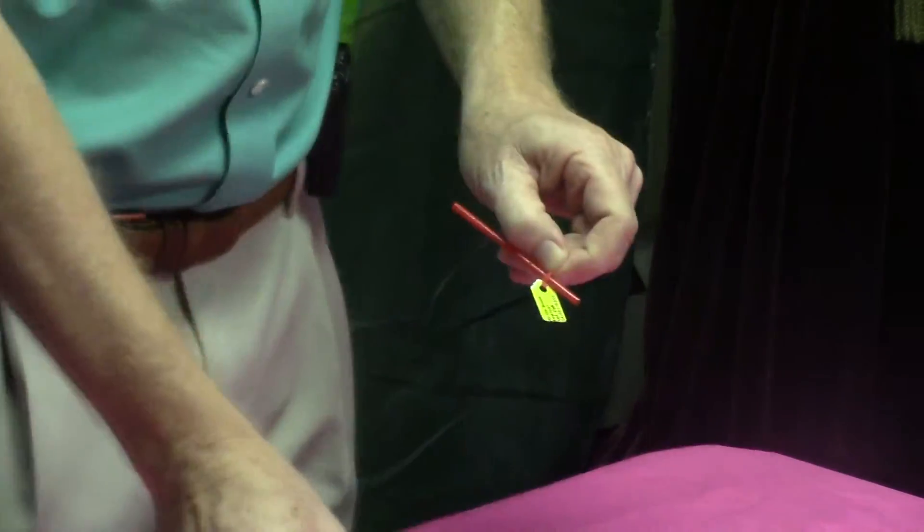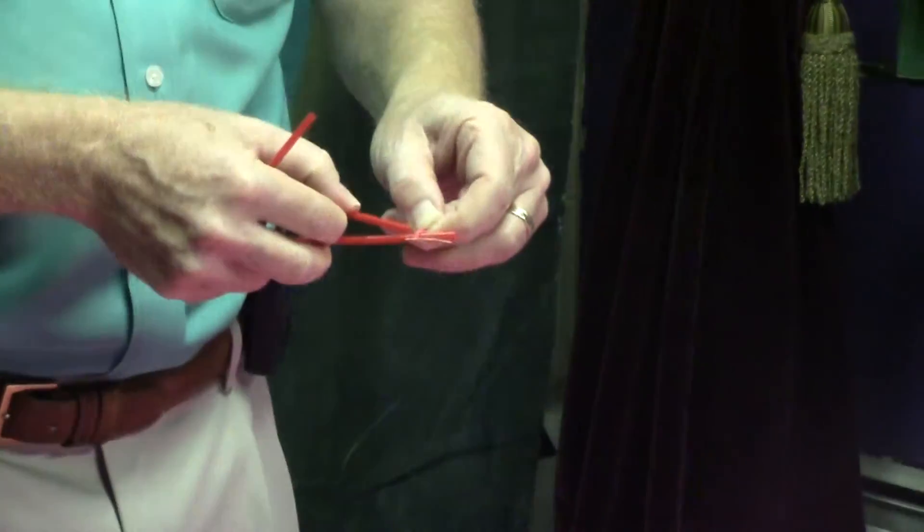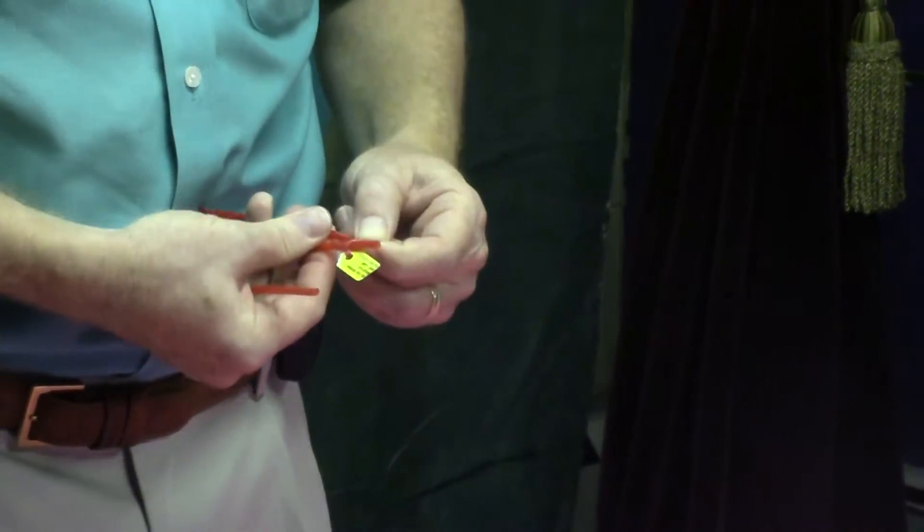So whichever three they pick get pulled out of the rubber band, and the rubber band is left on the one that's the left-handed stirrer.